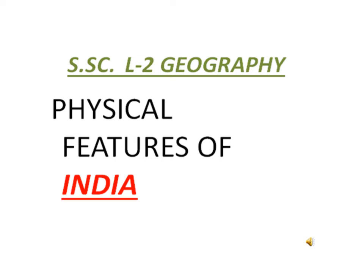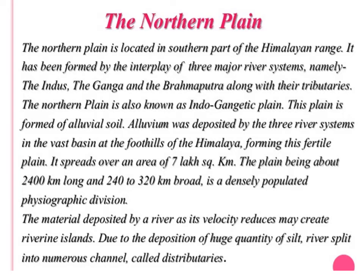We are describing the second lesson of geography: physical features of India. We will describe the second physical feature of India, that is the North Plain of India. The North Plain lies to the south of the Himalayas and is made by three major river systems: Indus, Ganga, and Brahmaputra, along with their tributaries.